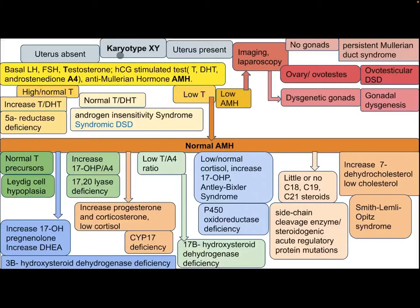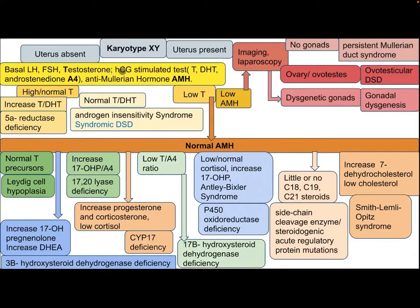Approaching patients with karyotype 46XY: if the uterus is present, the patient needs imaging and laparoscopy. If there is no gonad, this is persistent Müllerian duct syndrome. If there is an ovary or ovotestis, this is ovotesticular DSD. If there are dysgenetic gonads, this is gonadal dysgenesis. If the uterus is absent in karyotype 46XY, the patient needs basal LH, FSH, testosterone, HCG stimulation test, dihydrotestosterone, androstenedione A4, and anti-Müllerian hormone AMH.